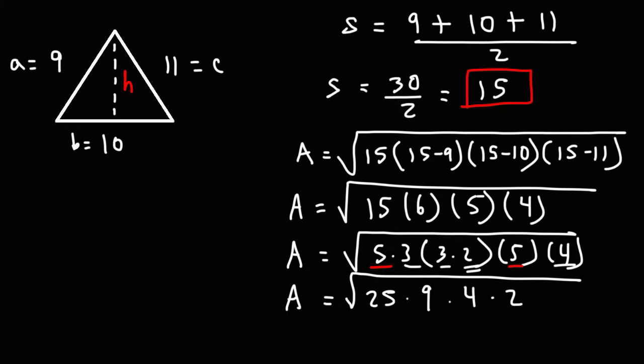Now we can break up the square root into individual square roots. So this becomes the square root of 25 times the square root of 9 times the square root of 4 times the square root of 2. The square root of 25 is 5. And the square root of 9 is 3. And the square root of 4 is 2.